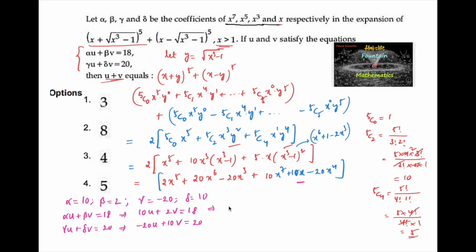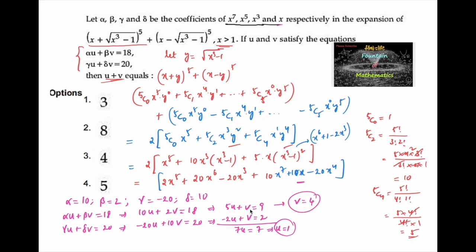Subtracting the second simplified equation from the first: (5u + v) - (-2u + v) = 9 - 2, giving 7u = 7, so u = 1. Substituting u = 1 into 5u + v = 9 gives v = 9 - 5 = 4. Therefore u + v = 1 + 4 = 5.